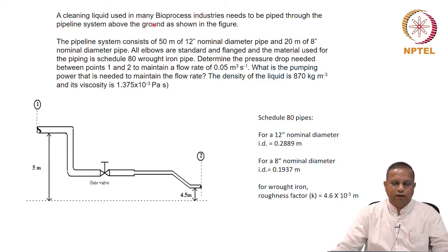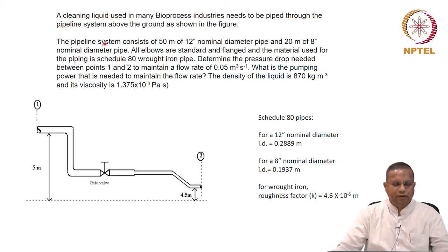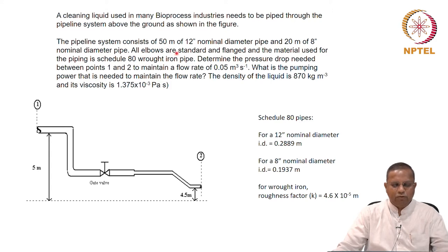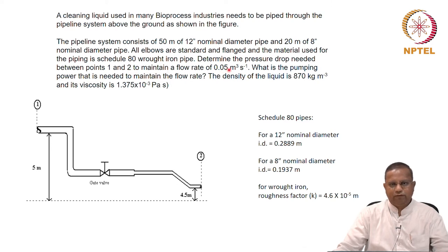A cleaning liquid used in many bioprocess industries needs to be piped through the pipeline system above the ground as shown in the figure. This is the ground and this is the piping network. The pipeline system consists of 50 meters of 12 inch nominal diameter pipe — this entire length is 50 meters — and 20 meters of 8 inch nominal diameter pipe. All elbows are standard and flanged, and the material used is schedule 80 wrought iron pipe. Determine the pressure drop needed between points 1 and 2 to maintain a flow rate of 0.05 meter cube per second.